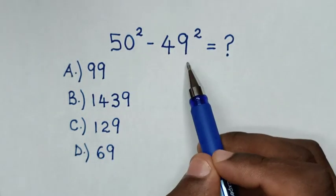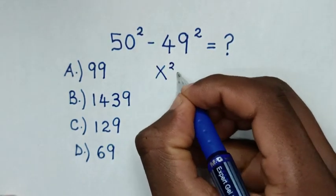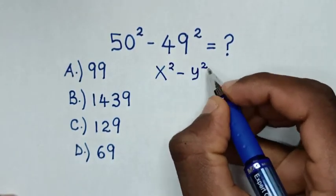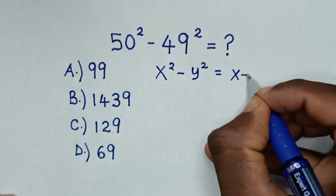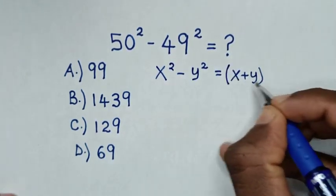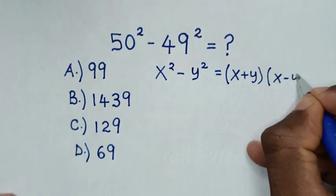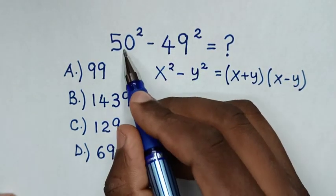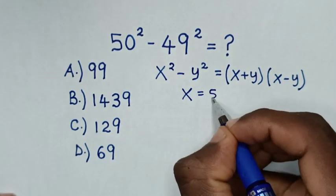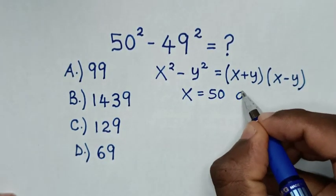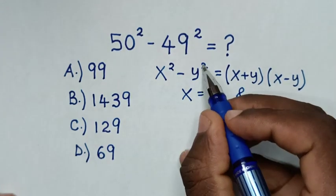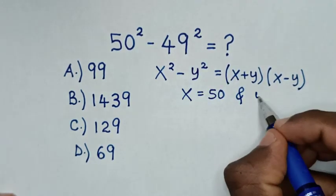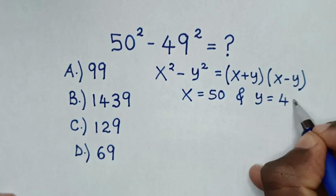So from this, our problem is in the form of x squared minus y squared, which is equal to x plus y bracket times x minus y. When you compare x squared with 50 squared, then x is equal to 50. And when you compare y squared with 49 squared, y is equal to 49.